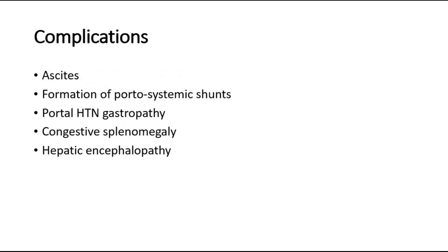Complications of portal hypertension include ascites, which is due to an increase in fluid shift leading to increased lymphatic drainage from the liver, overwhelming the thoracic duct capacity and causing hepatic lymph to flow into the peritoneal cavity. Other complications include formation of portal systemic shunts, portal hypertensive gastropathy, congestive splenomegaly, and hepatic encephalopathy secondary to hyperammonemia, where elevated ammonia is exacerbated by portal systemic shunting.